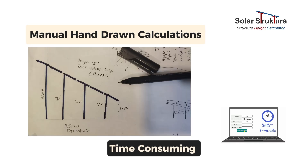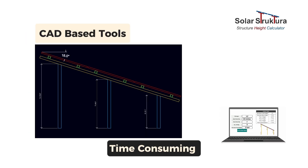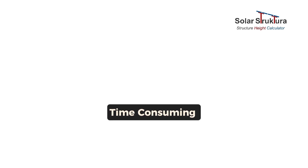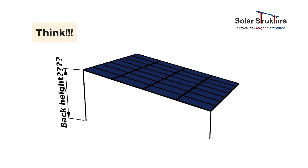When you design a solar elevated structure, you have to use manual calculation and drawing, or CAD-based software tools, which takes a lot of time. If you have to design a structure which needs 4-panel portrait and 12-degree angle, how much back height will be?